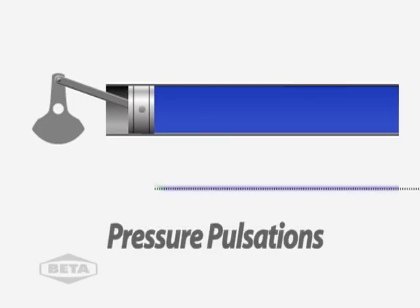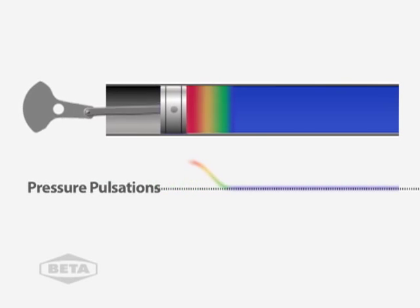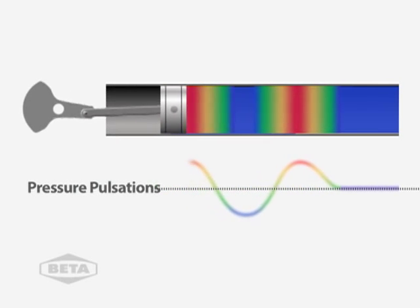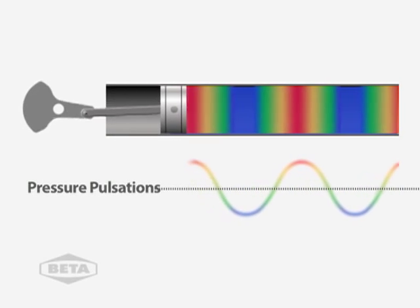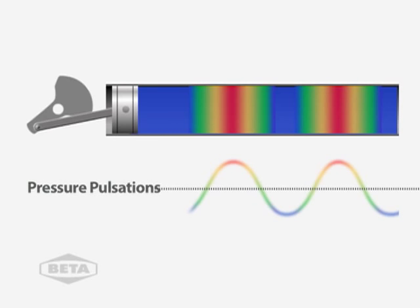Pressure pulsations are created as gas enters or leaves a cylinder in short bursts. Pressure pulsations travel through the piping and vessels. Pressure can create very high unbalanced forces between 10 and 10,000 pounds peak to peak.